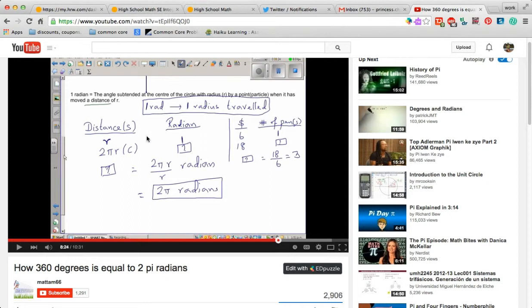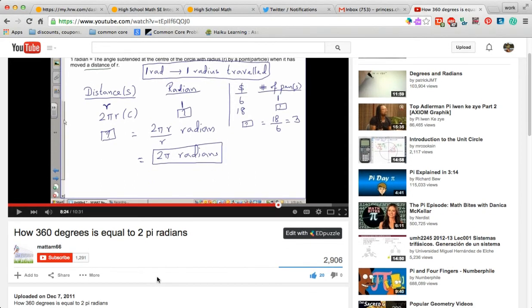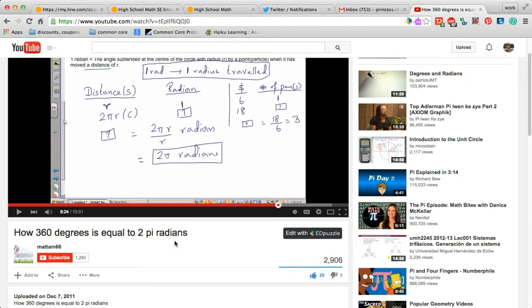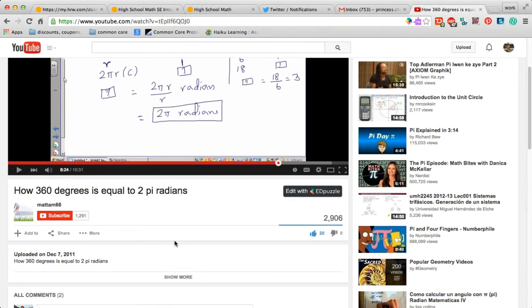And therefore that is the reason why when you go around the whole circle is two pi radians. And one radian is basically r, and r stands for radius in the circle. And that's it.